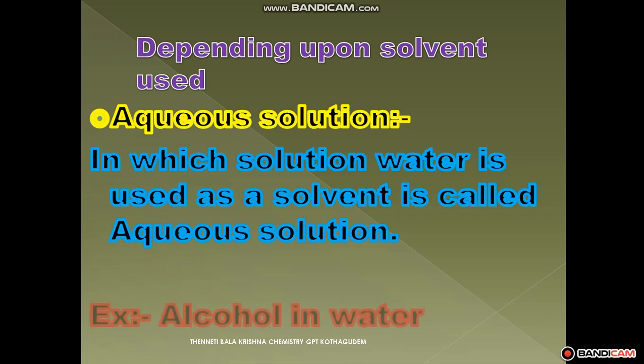An example of an aqueous solution is alcohol in water. In this example, water is used as a solvent. The chemical name of water is 'aqua', so that solution is called an aqueous solution. In this solution, water is used as a solvent, so this type of solution is called an aqueous solution.